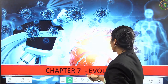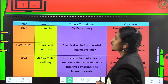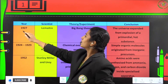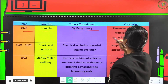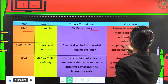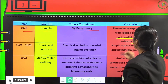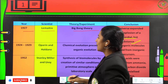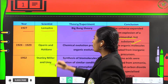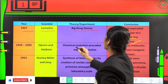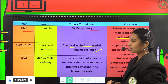Welcome to this class on evolution. These are the important points for the next chapter of second PUC biology. Firstly, in the year 1927, it was Lamarck who proposed the Big Bang theory — the universe expanded from the explosion of a pre-model or hot substance. From 1924 to 1929, Oparin and Haldane explained that chemical evolution preceded organic evolution.